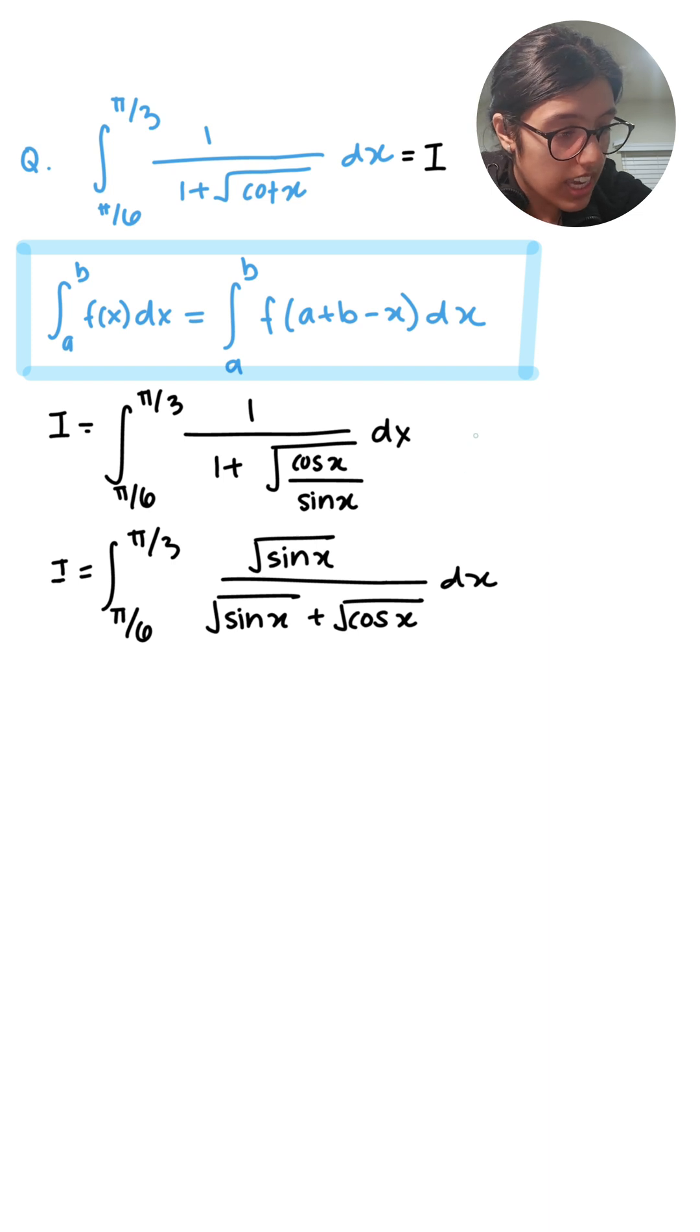In our case, a equals the lower bound π/6, and b equals the upper bound π/3. So this becomes f(π/6 + π/3 - x), which simplifies to f(π/2 - x).